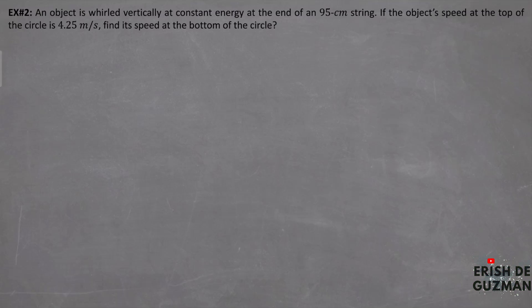Example number 2: an object is wheeled vertically at constant energy at the end of a 95 cm string. If the object's speed at the top of the circle is 4.25 meters per second, find its speed at the bottom of the circle. Since the problem states constant energy, we apply conservation of energy. At the top of the circle, the ball has potential energy relative to the bottom.